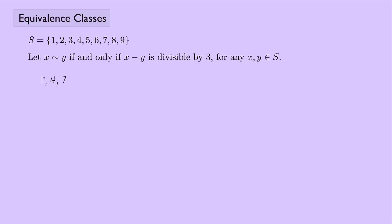So the elements of S equivalent to 1 are 1, 4, and 7. Now for 2: checking 5 — 2 minus 5 works; 8 — 8 works; 3, 6, and 9 do not. So we get {2, 5, 8}. And the last group, {3, 6, 9}, will all be equivalent to each other.